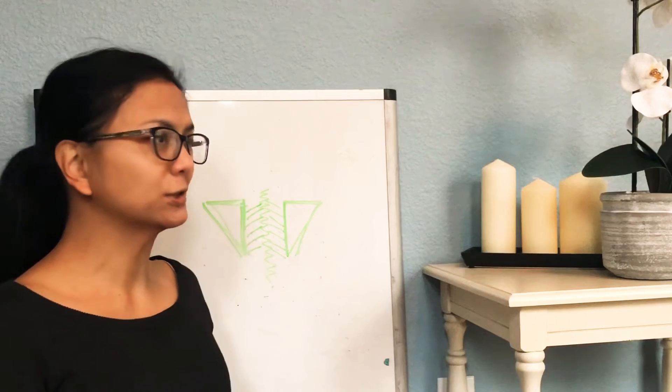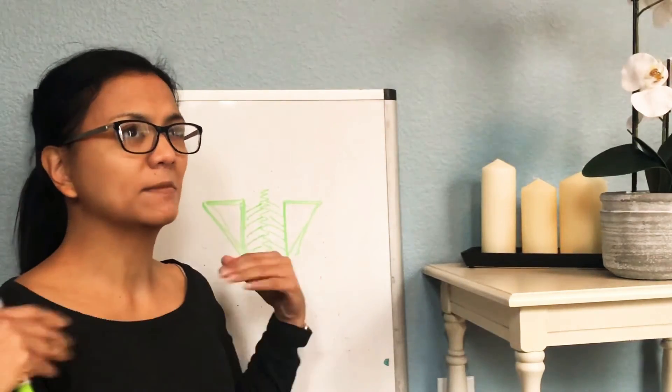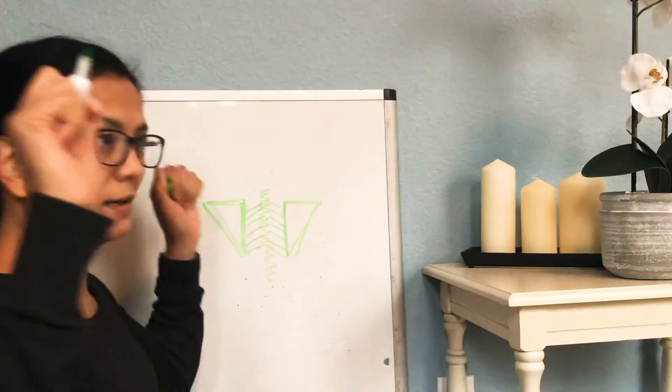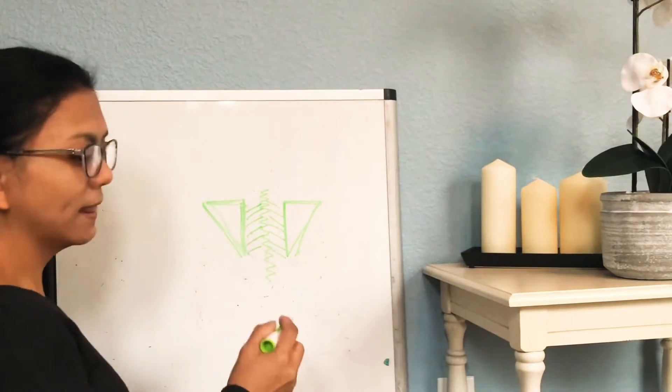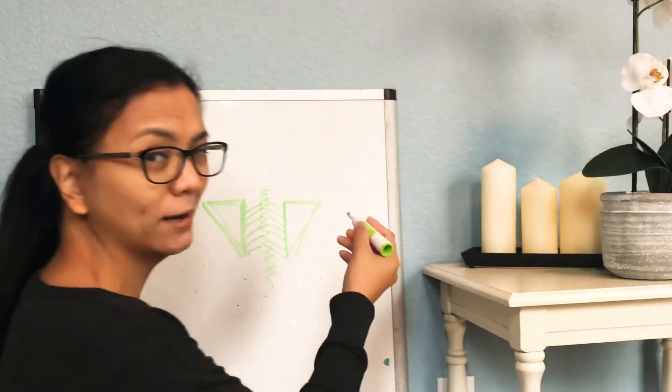Today we're going to talk about part of the middle and lower trapezius and the latissimus dorsi. The trapezius muscle—we're going to talk about the upper one when I discuss the neck—is a big muscle that connects to your head.